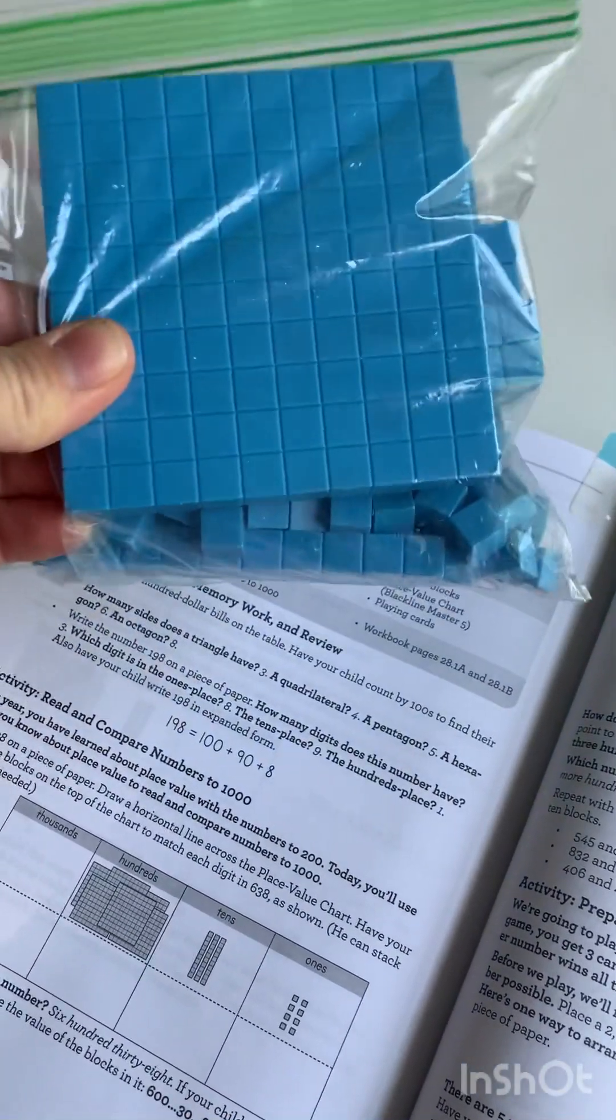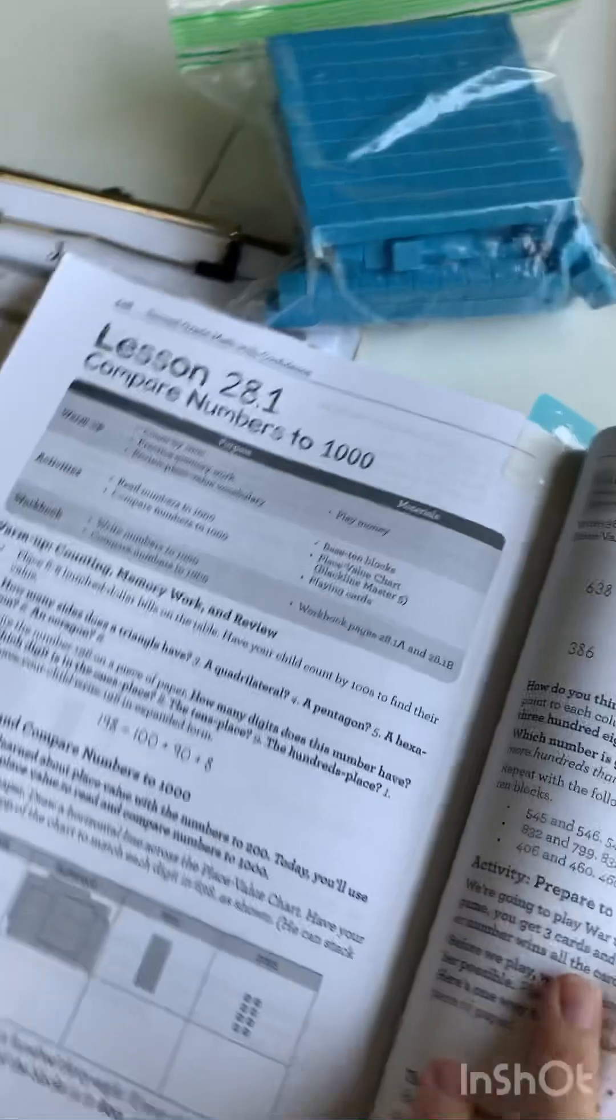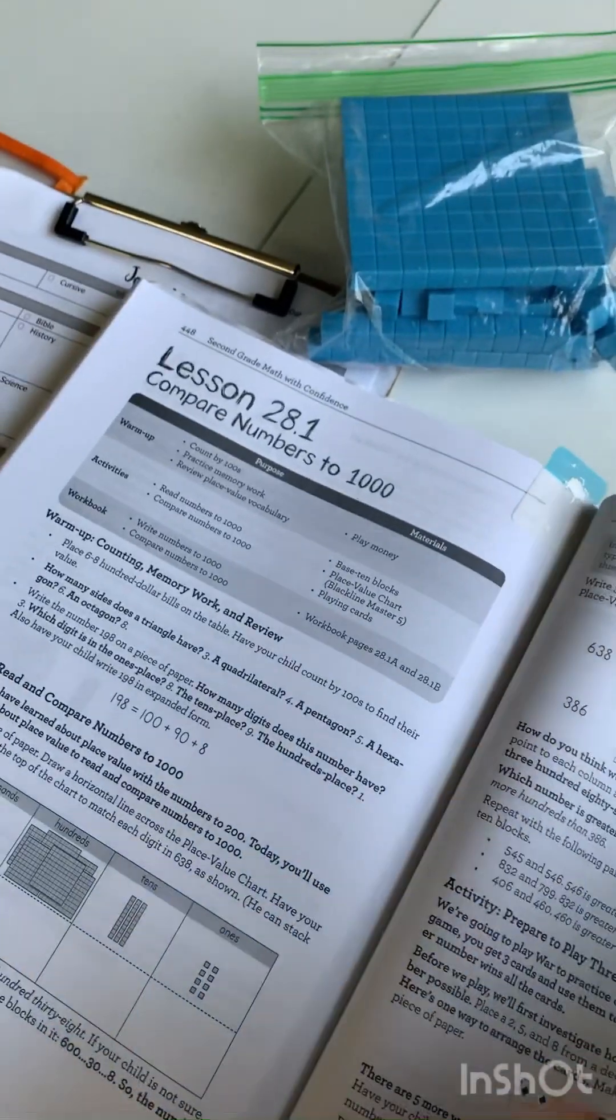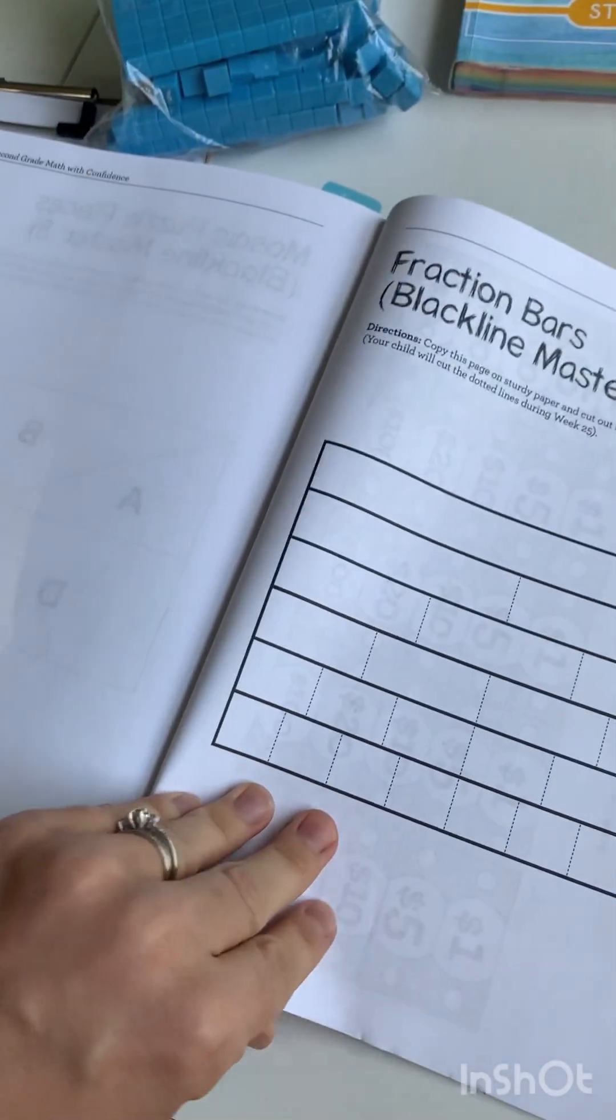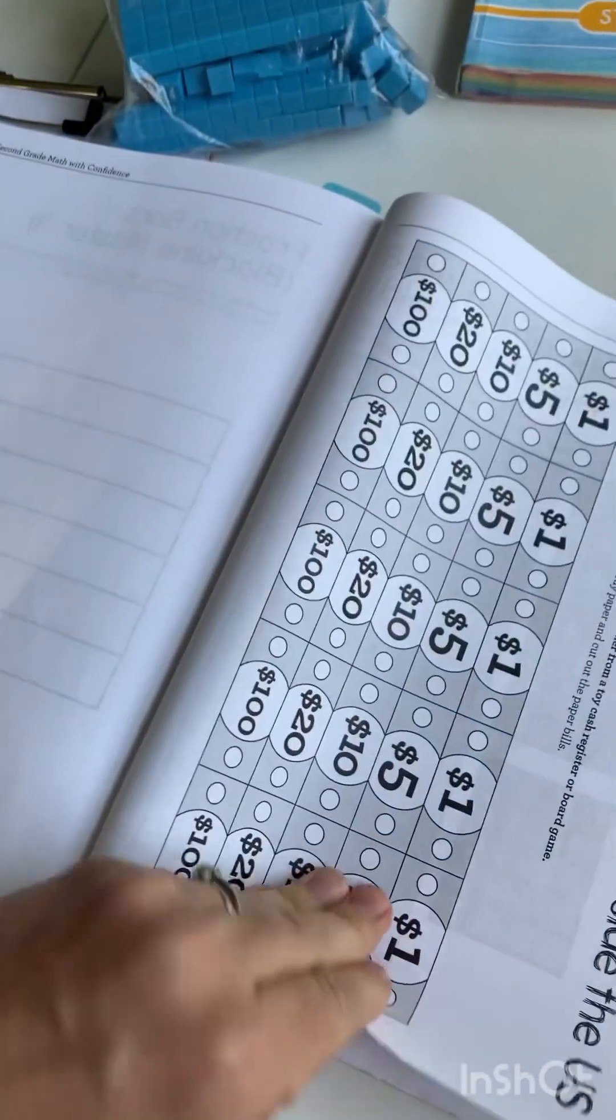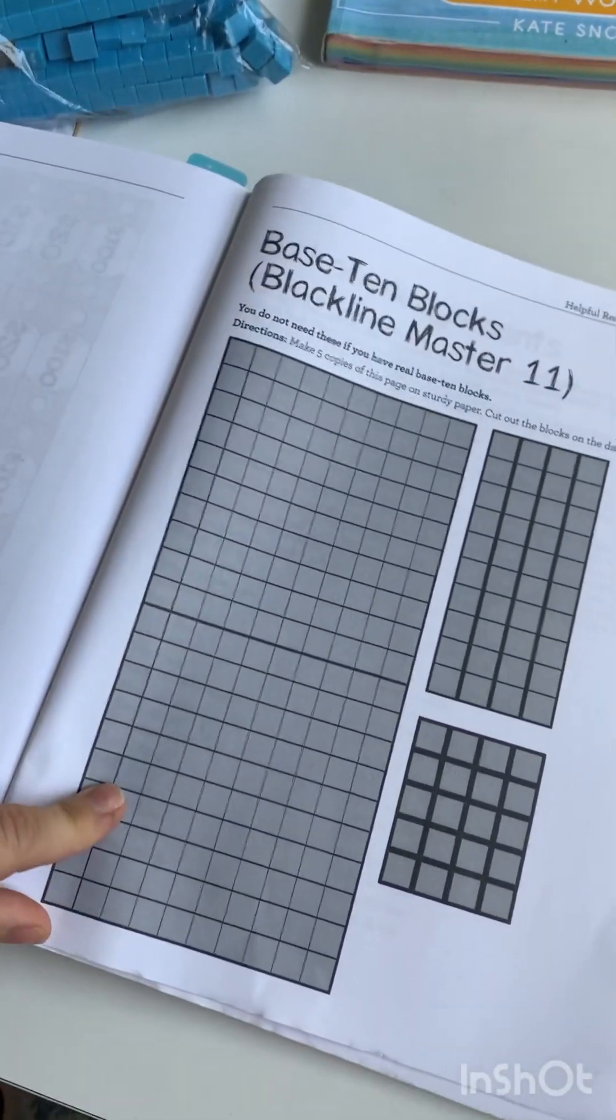Luckily in this book, they have some blacklines, so I think I'm going to make some copies to make some of these 100 blocks. Back here, she has all the stuff that you can print off, and I think I saw one right here. I'm going to go make some copies so we have these for our lesson.